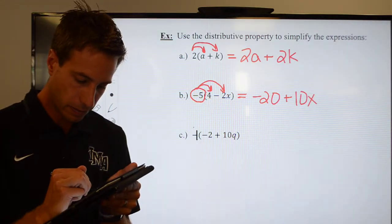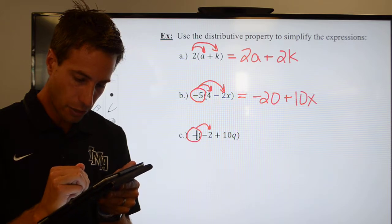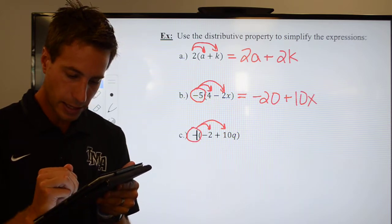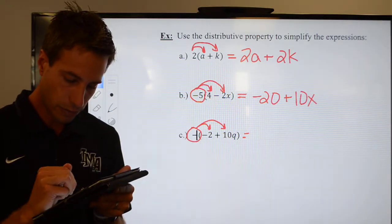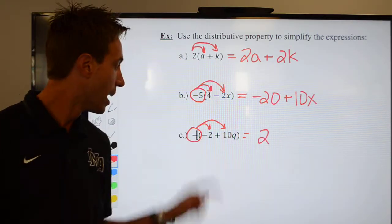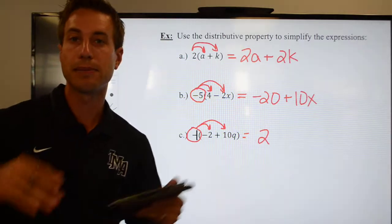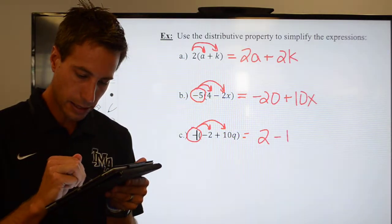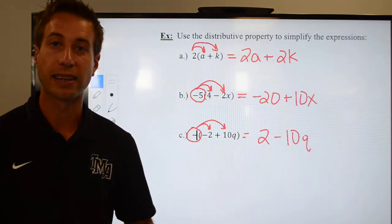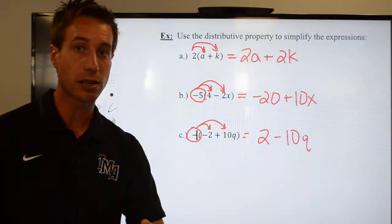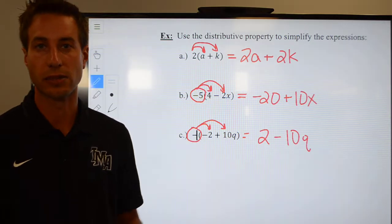So we're going to distribute that negative 1 through the parentheses, and let's see what happens. I now have a negative 1 times a negative 2 gives me a positive 2, and a negative 1 times a positive 10q should be a minus 10q. Again, look to see if you combine like terms, but I don't have like terms, so I'm done. There's nothing else I can do.